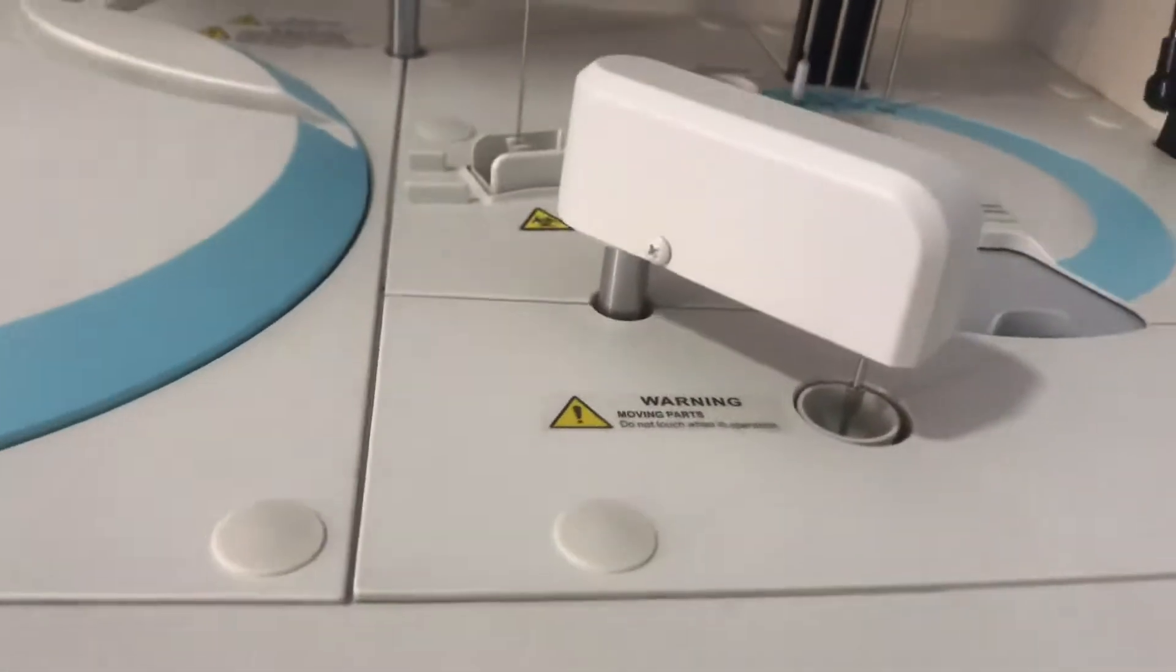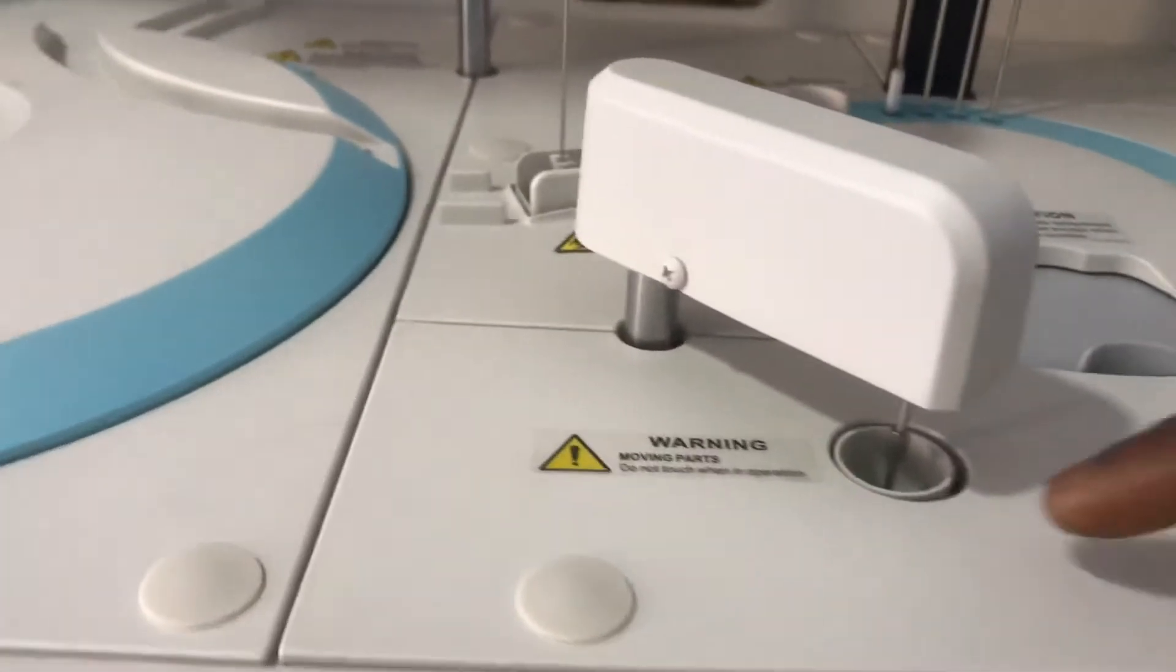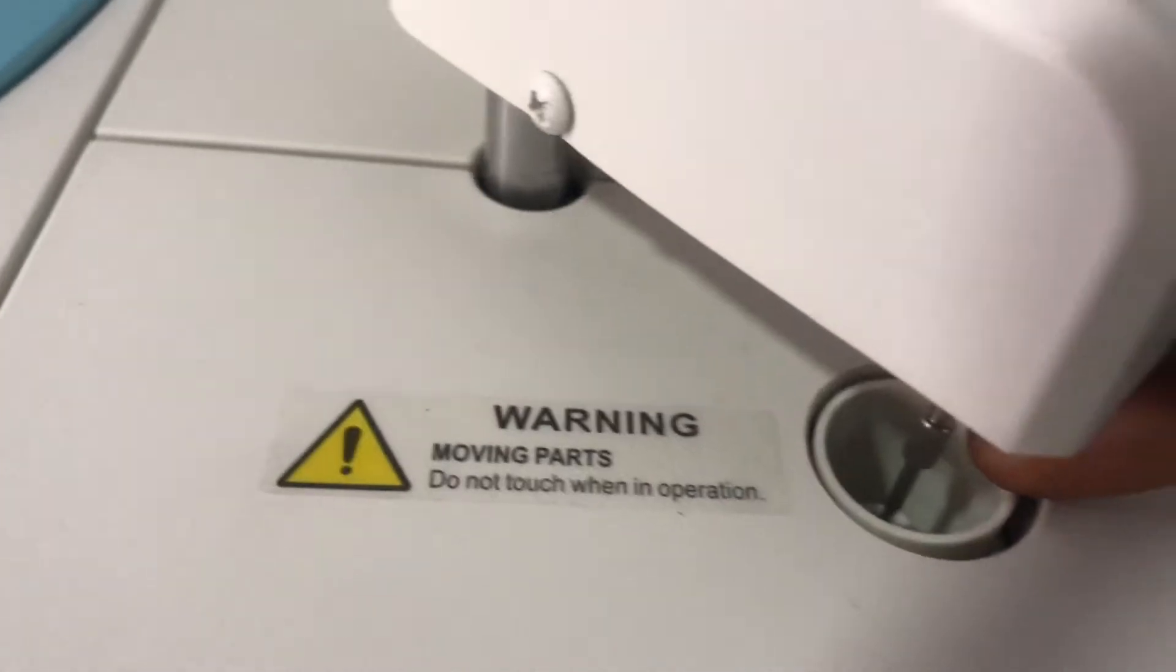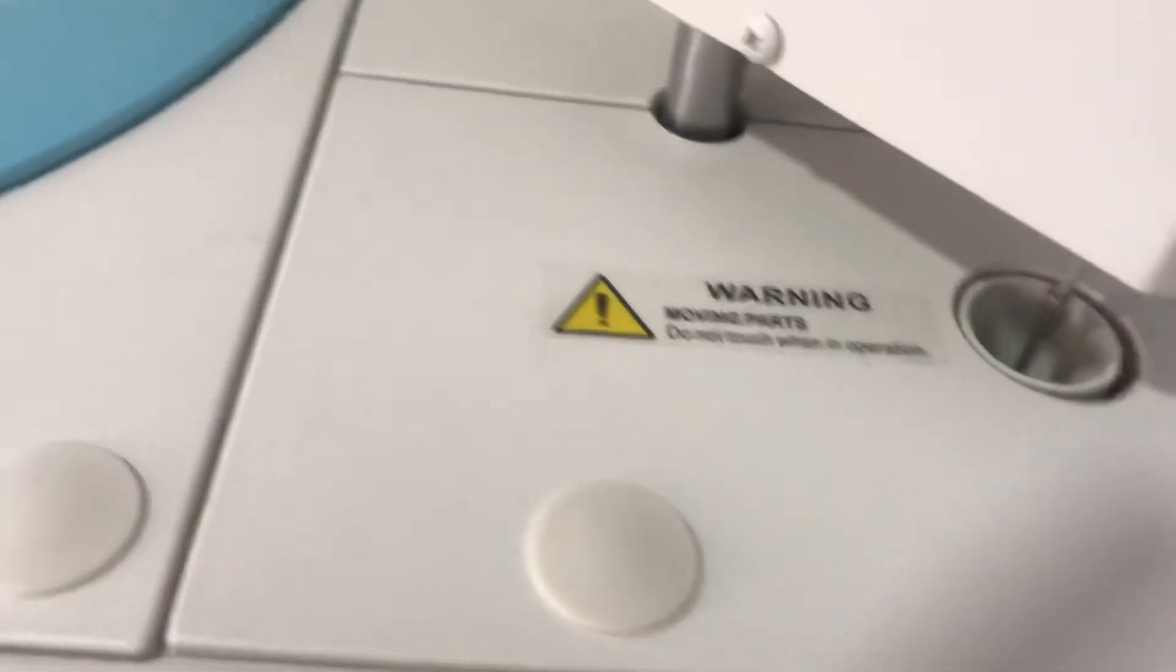What we have here is the mixer. This is the arm, this is the mixer, and that's the rotor. What it does is—and there's also a wash well here—after mixing it will come here and then it will be washed.